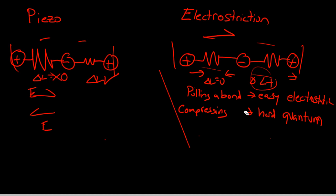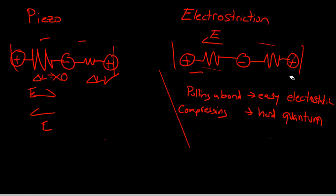But let's take the other case where the electric field is not that way — the electric field is going this way. In that case, we will have this atom going this way and this atom going that way and this atom going this way. So now here we have compression and thus delta L is near zero. But we have extension here again, so delta L is positive.